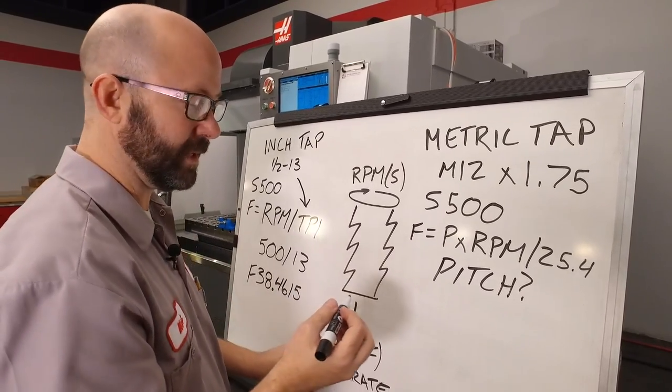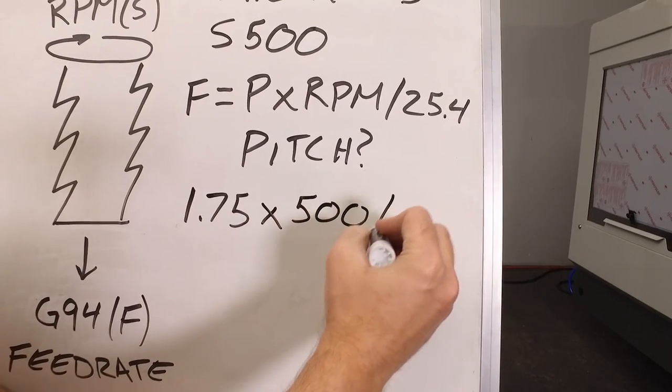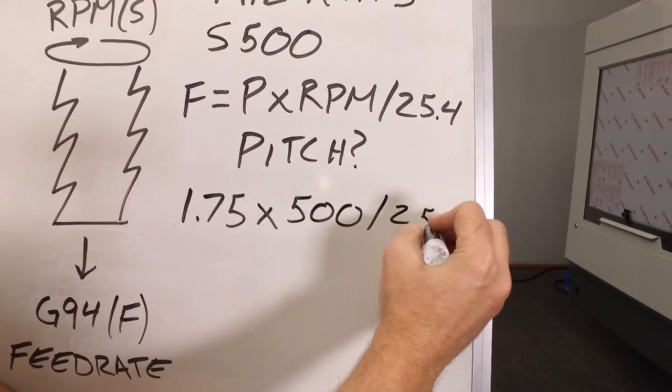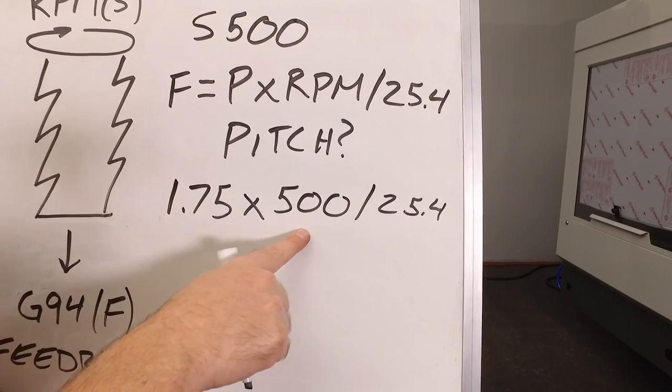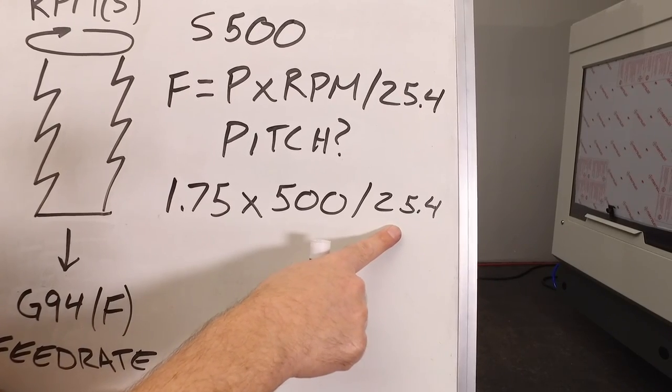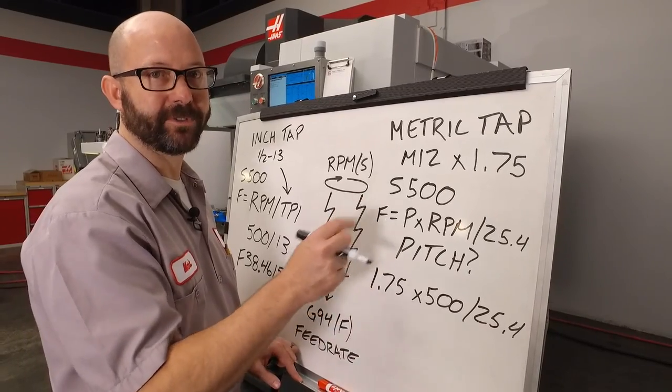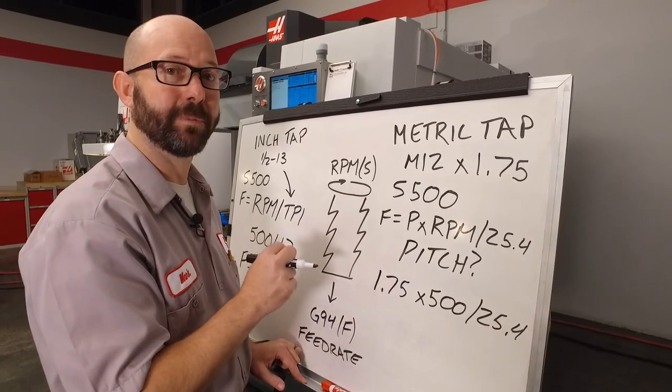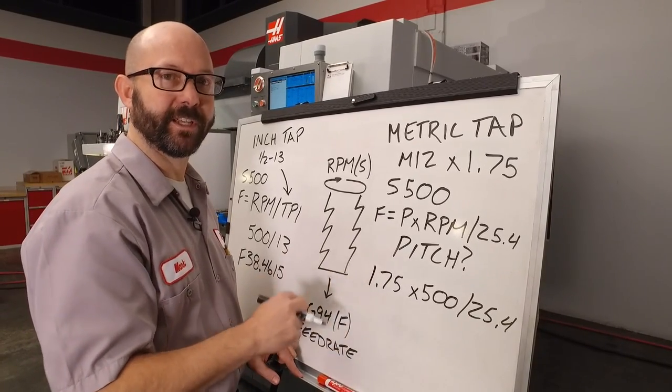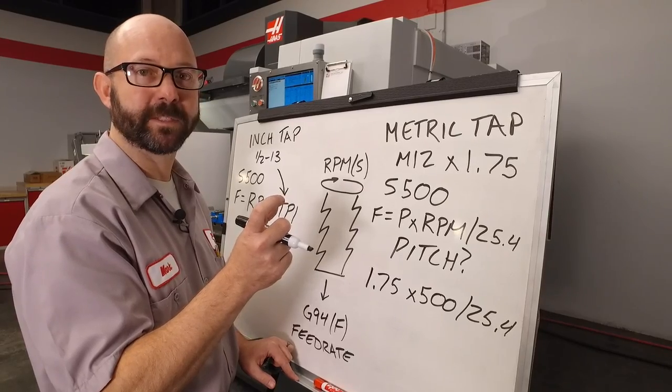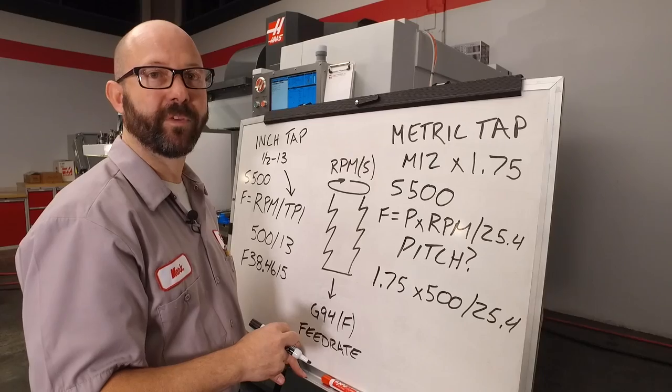Let's fill in the blanks in our formula. 1.75 times 500 divided by 25.4. 1.75 is our pitch in millimeters. 500 is our RPM. And where does the 25.4 come from? Well, our pitch for a metric tap is in millimeters, and my machine is in inch mode. The 25.4 is there to convert my millimeters into inches. There are exactly 25.4 millimeters per inch. So by dividing by the 25.4, we're converting it into a feed rate that we can use.